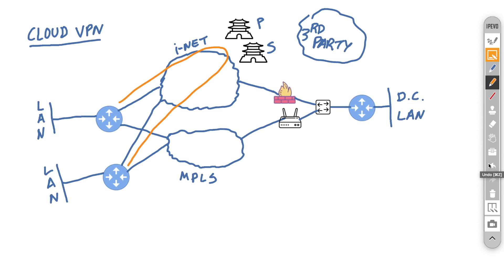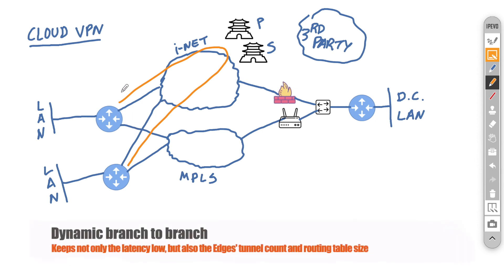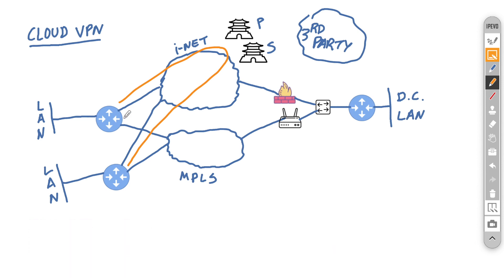If you want branches to communicate directly, you can enable that via cloud VPN. The first few packets will flow to the hub — whether that's a physical edge or a gateway — which buys time for the edges to form an on-demand tunnel between themselves. Once formed, the shortest path is used. If the tunnel is no longer used after 180 seconds, it will be brought down. This is because connecting every edge in a full mesh would require a large box and would exhaust tunnel count and routing table space. Dynamic tunnels reduce those counts to a minimum.